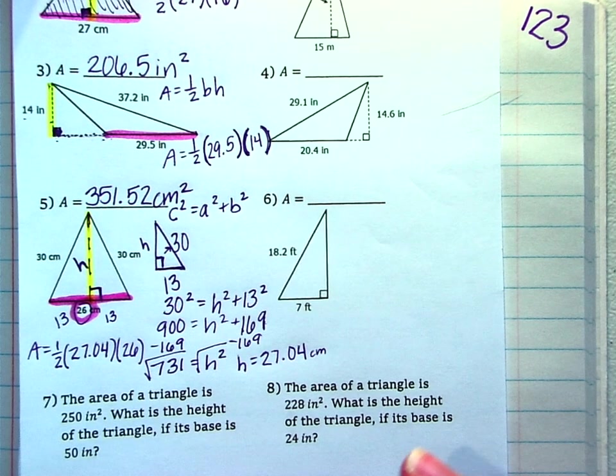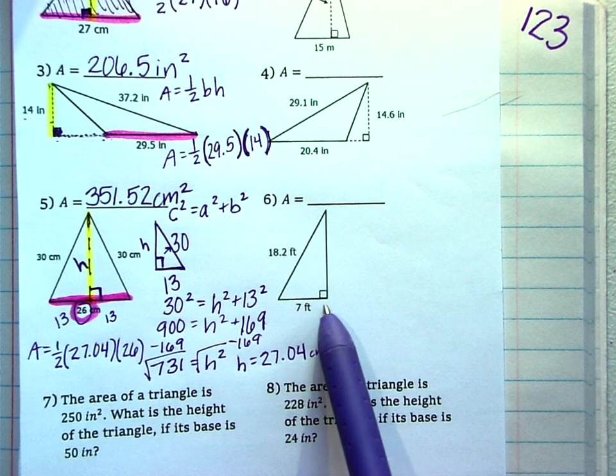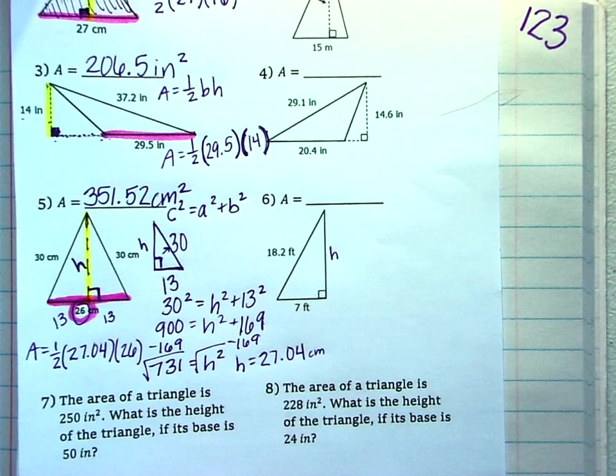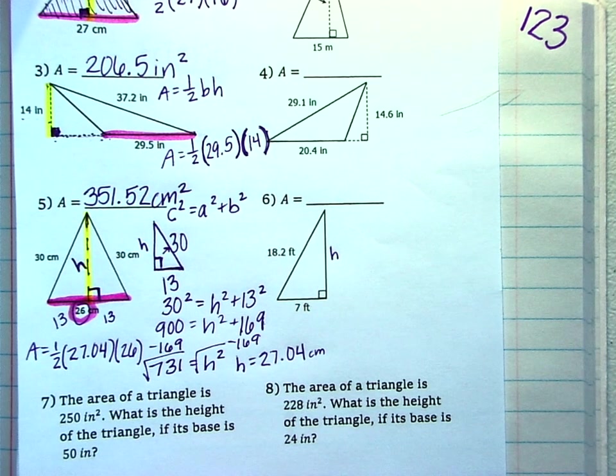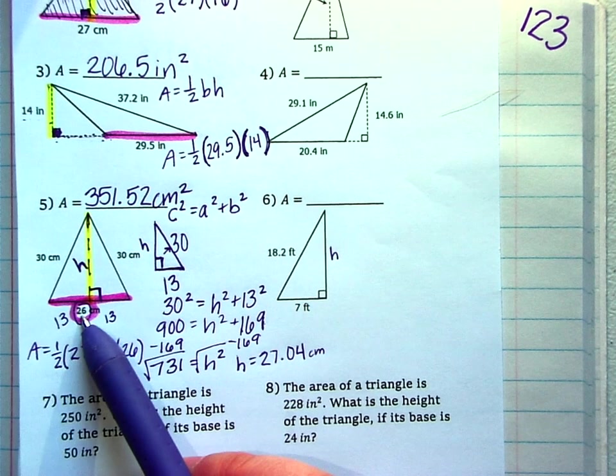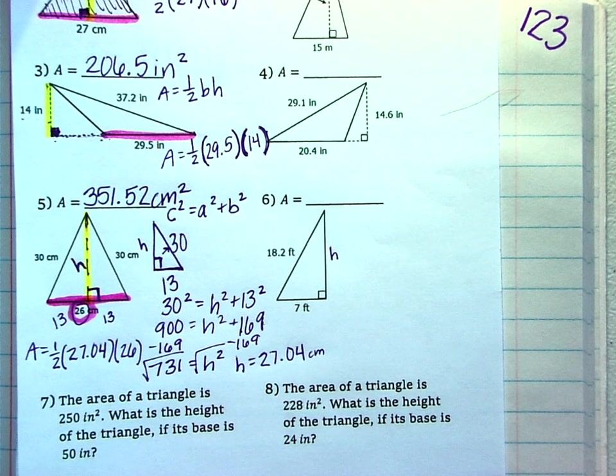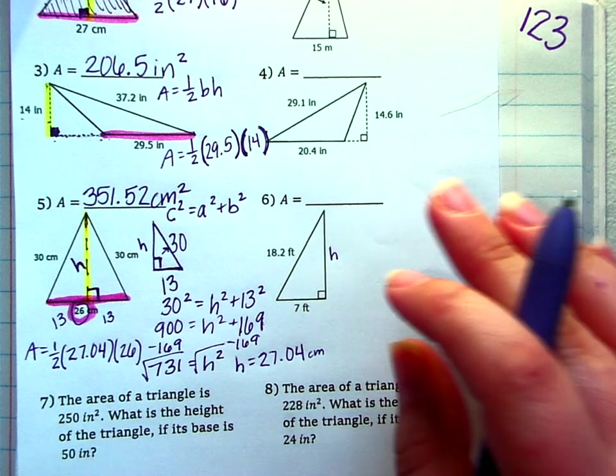All right cool. So number six is kind of similar but it's not an isosceles triangle. They already have it as a right triangle and you do need to solve for H. So figure out the height by using the Pythagorean theorem like we did right here and then solve for the area. So you don't have to cut the seven in half because it's not isosceles. You don't have to do what we did right here you only do that for isosceles. This is already a right triangle.